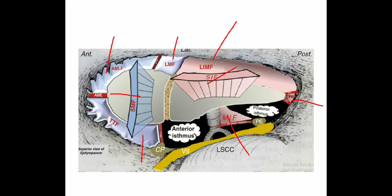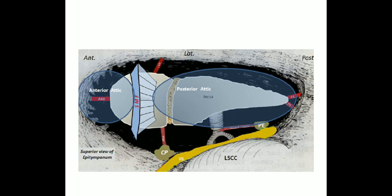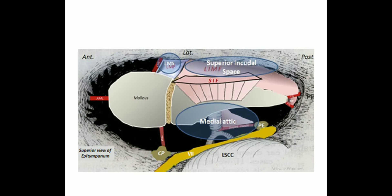The mucosal folds divide the middle ear into several spaces. The superior malleal fold divides the attic into an anterior attic and a posterior attic. The posterior attic is further divided by the superior incudal fold into a lateral posterior attic and a medial posterior attic. The lateral posterior attic is again divided by the lateral incudomalleal fold into a superior incudal space and an inferior incudal space.